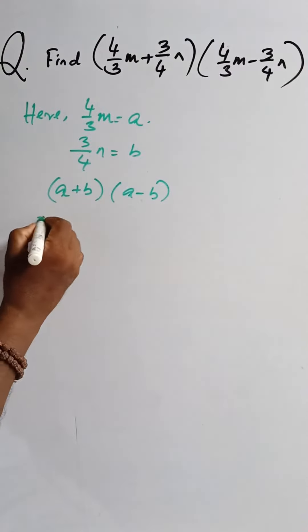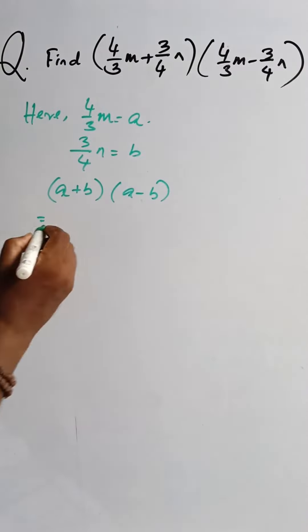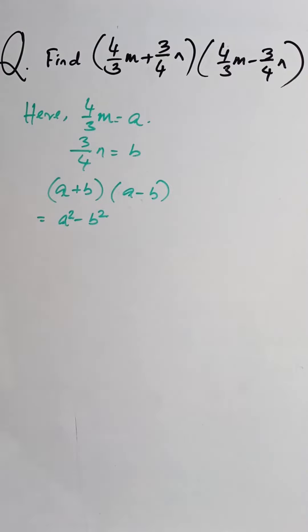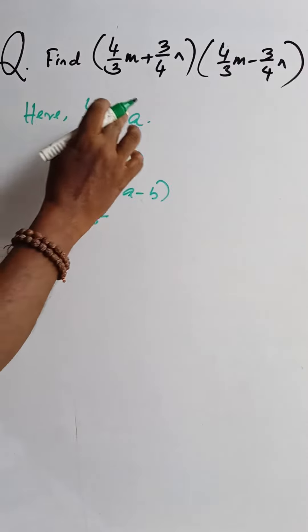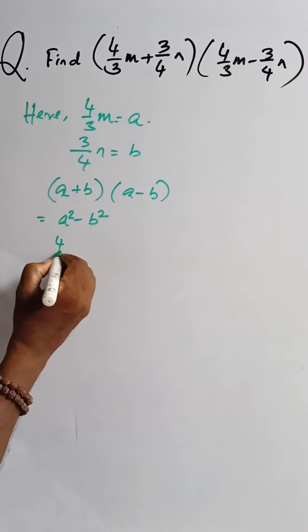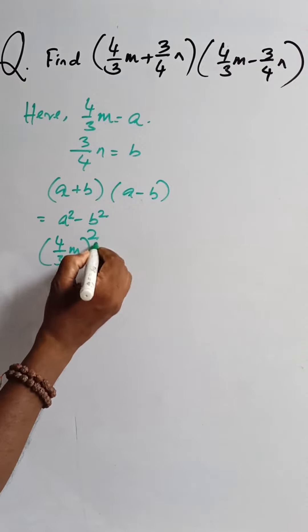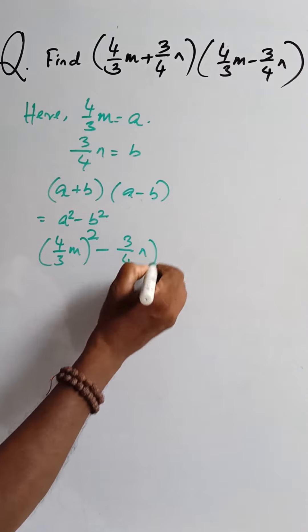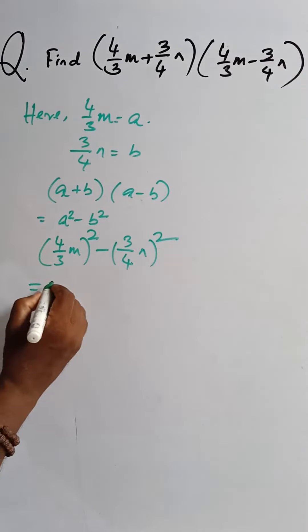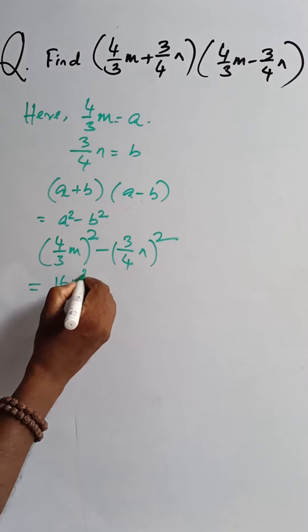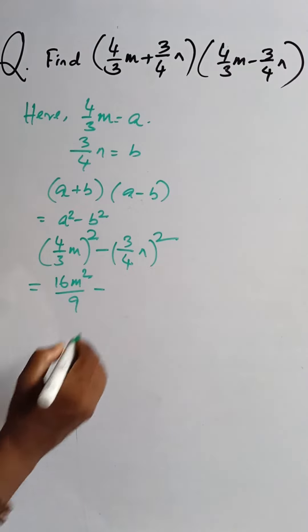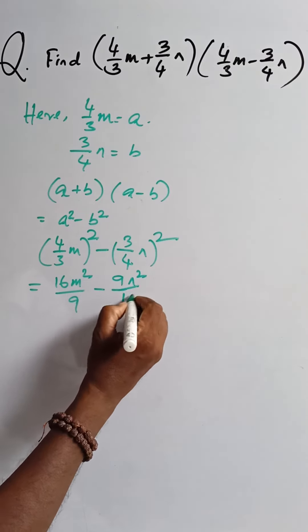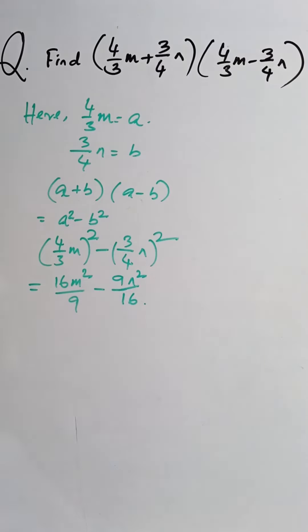That is the identity a² - b². Substituting the values of a and b: (4/3m)² - (3/4n)² equals 16m²/9 minus 9n²/16. That is the answer.